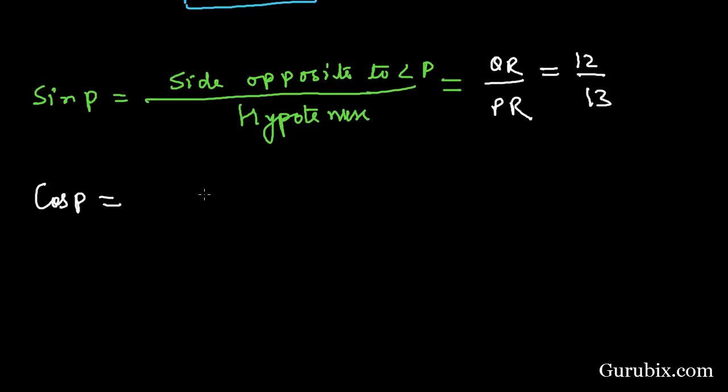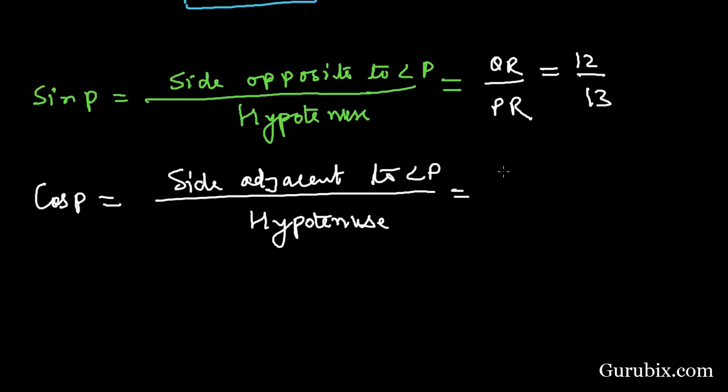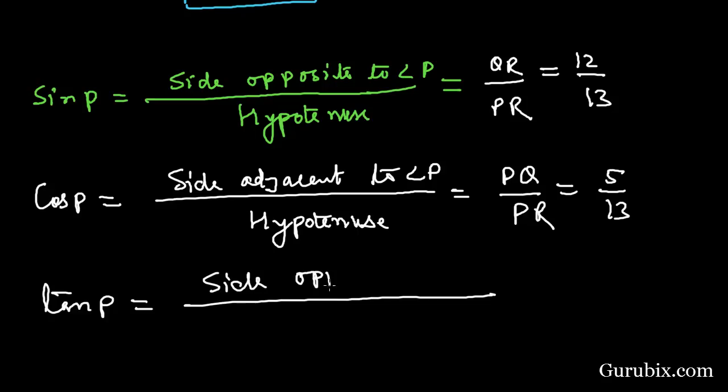And now we shall find cos P. This is cos P, this is equal to side adjacent to angle P over hypotenuse. It will be PQ over PR, this is 5 over 13. And tan P will be side opposite to angle P over side adjacent to angle P.